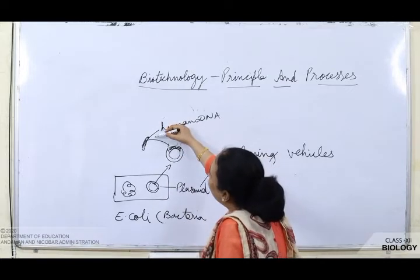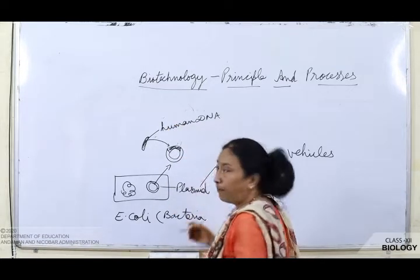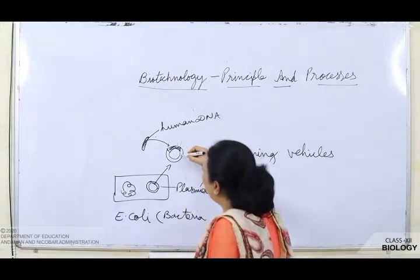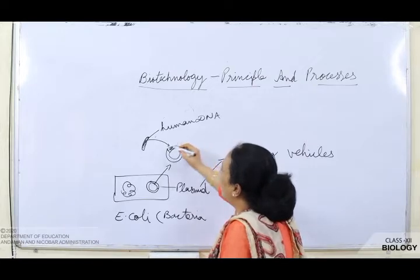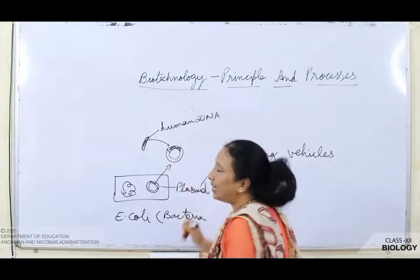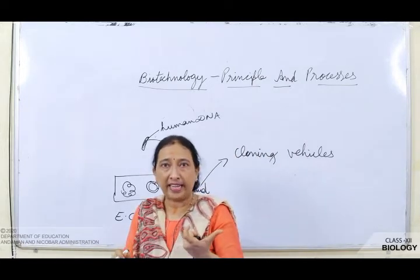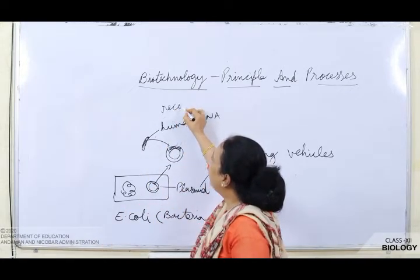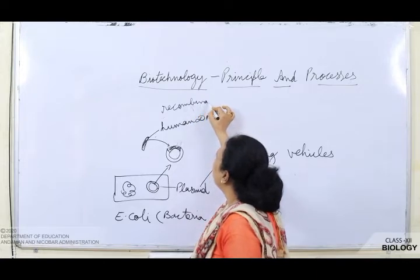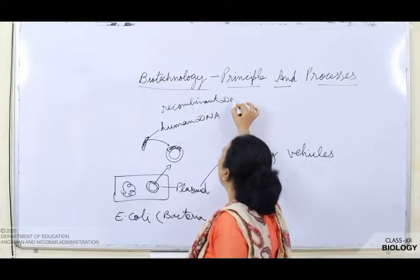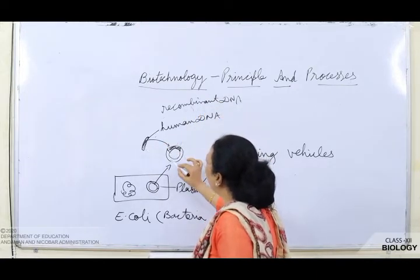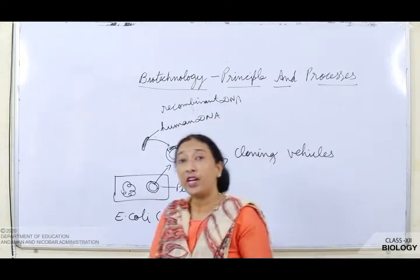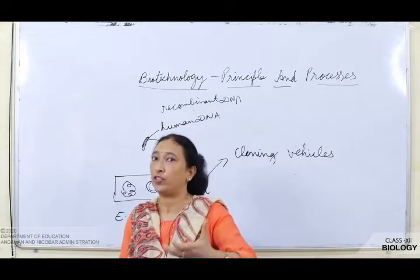This inserted DNA is a piece of human DNA — the desired DNA we want to clone — placed inside the plasmid. Since we are combining two DNAs, the plasmid DNA and the human DNA piece, it is known as recombinant DNA — meaning a new combination of DNA.